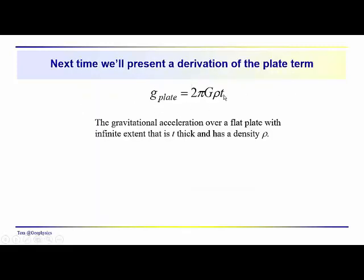The next time, we're going to go through a derivation of the plate term to show you how we get an expression for the acceleration due to gravity of this infinite plate, which turns out to be a fairly simple expression - 2 pi g times the density times the thickness of the plate. You'll find this derivation in a lot of geophysics texts, so you might have a look in advance. Talk to you later. Thanks.